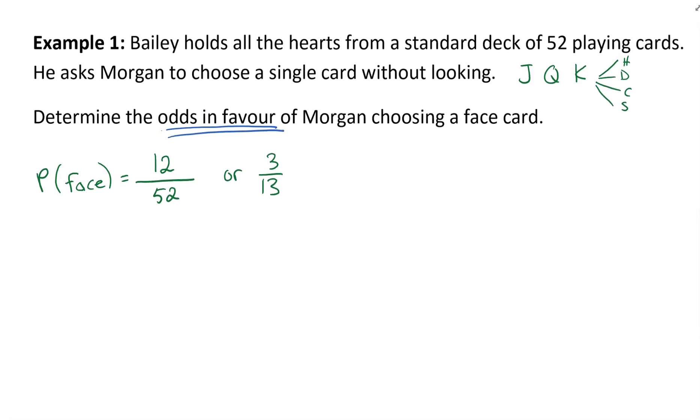So how do I change from a probability to odds? We're looking at favorable outcomes to unfavorable outcomes. A common mistake students make is they just rewrite this as a probability sideways and say this would be 12 to 52, which is wrong.